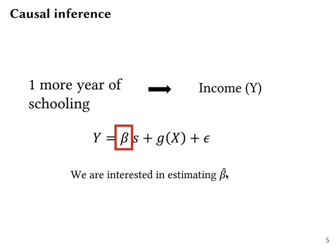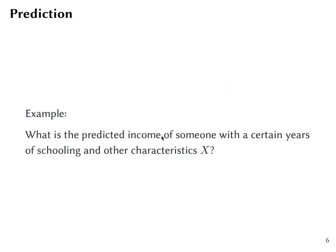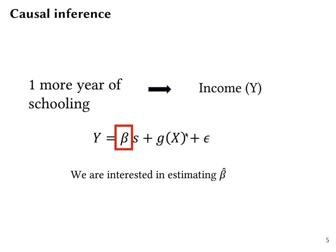So what we estimate is beta hat. We of course control for some other characteristics that distinguish different individuals which may differ along other characteristics.